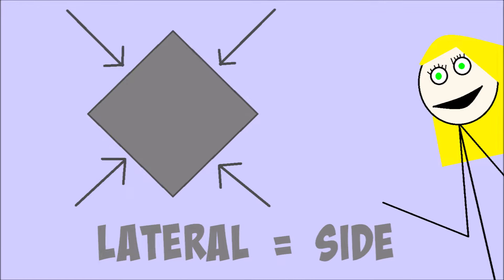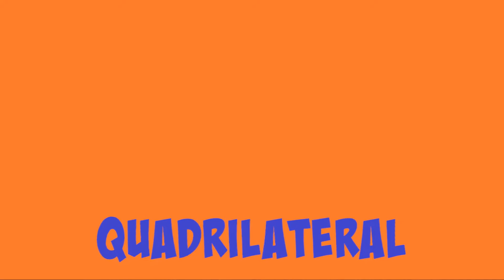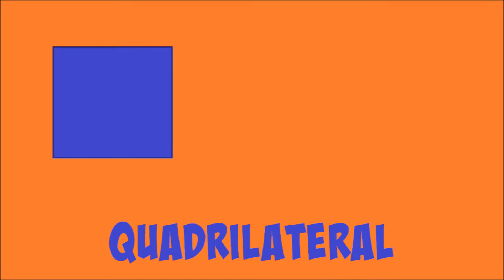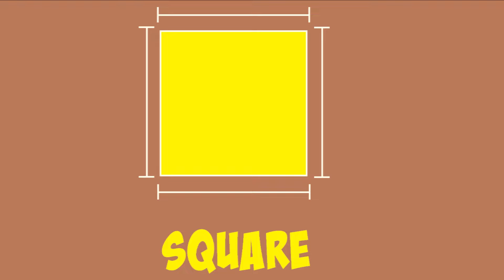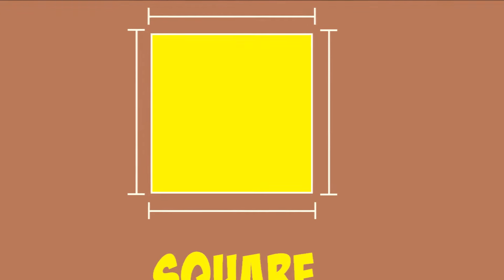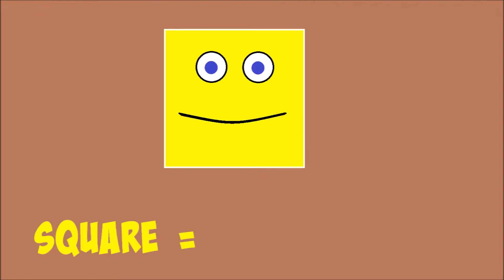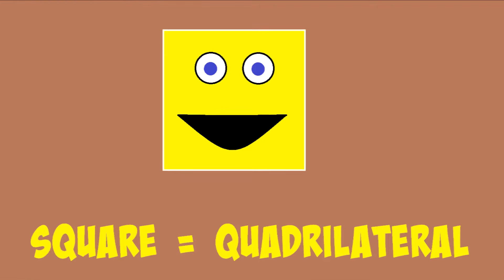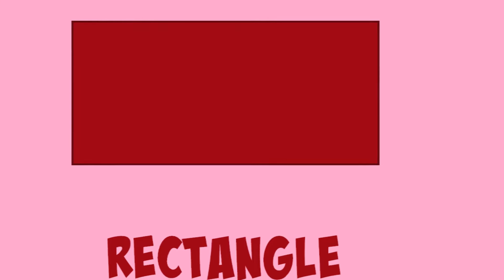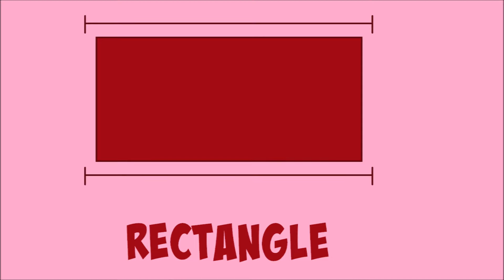A quadrilateral is a shape that has four sides. A square is a shape with four flat sides that are all the same length. A square is a quadrilateral.